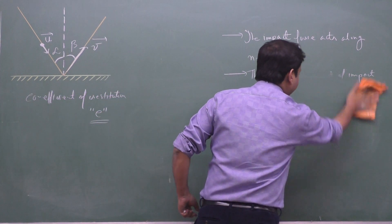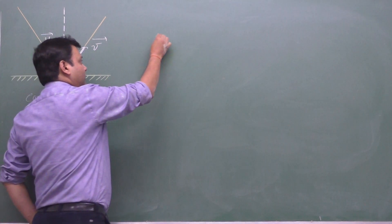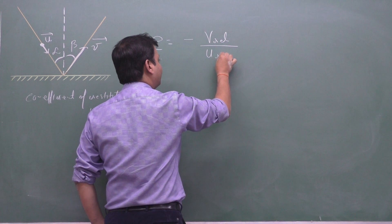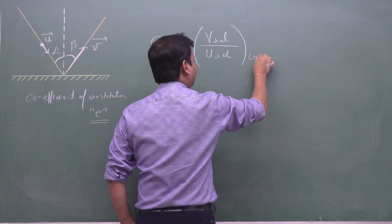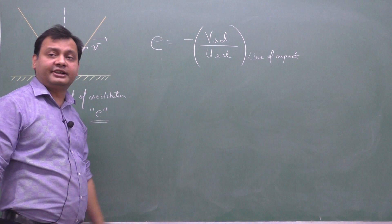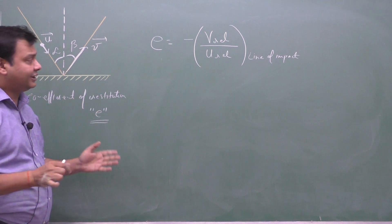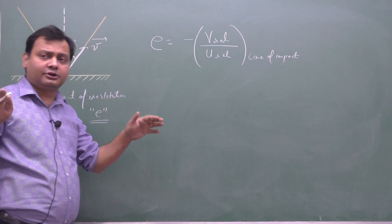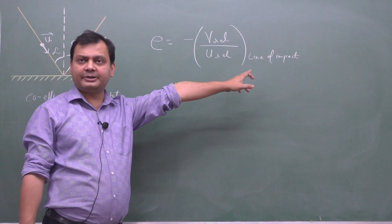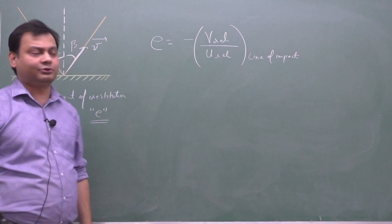The coefficient of restitution is defined as the negative of the relative velocity after the collision divided by the relative velocity before the collision, along the line of impact. So the relative velocities are taken along the normal axis — the line perpendicular to the colliding surfaces at the point of contact. We take the components of velocities along the line of impact to find v-relative and u-relative, then apply the value of e.